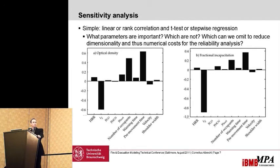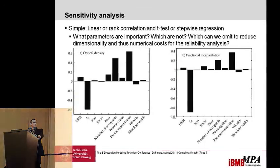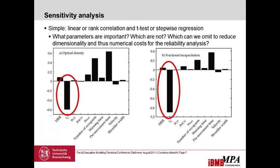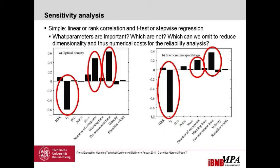Here are the results of the sensitivity analysis. The fire growth parameter — in this case alpha or Tg — has the highest influence, followed by the pre-movement time, then the number of occupants. For the optical density threshold, the soot yield played a very important role, and for the FED threshold, the hydrogen cyanide yield played an important part.